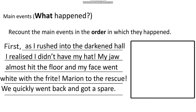Next paragraph: 'As I rushed into the dark hall, I realized I didn't have my hat. My jaw almost hit the floor and my face went white with the fright. Marion to the rescue — we quickly went back and got a spare.' I think a lot of things need to be clarified here for my audience. First, 'as I rushed into the dark hall' is not clear — what hall, and why is it darkened? It could be any hall. For a topic sentence, the topic needs to be front and center. The whole idea of this paragraph is that I realized I didn't have my hat, so I need to make that clearer.